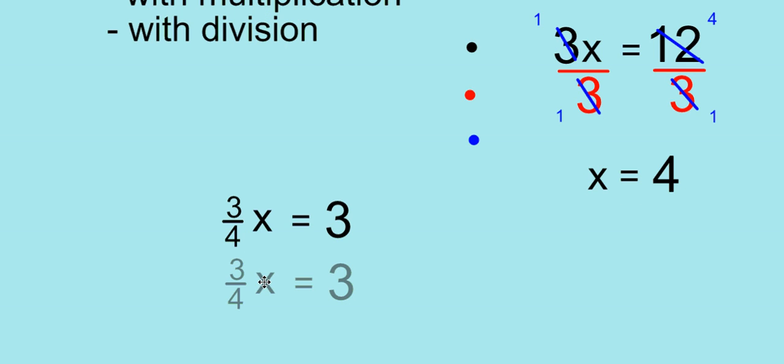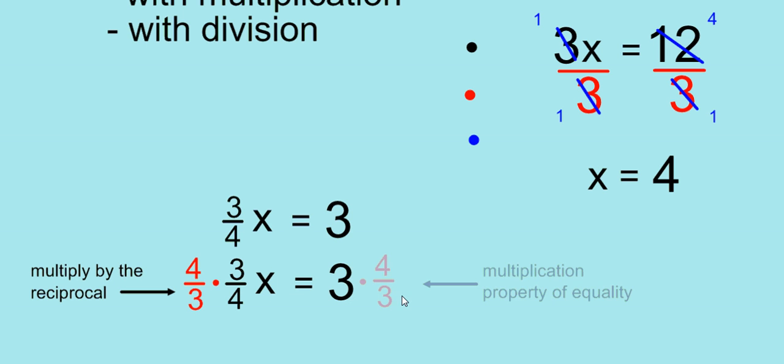What we need to do when we're solving this type of problem is first we have to multiply by the reciprocal, and that will reverse the process here. And on the other side, we must multiply by the same value. Similar to what we did in this simpler problem where we divided both sides by 3, here we're multiplying both sides by the same value, and that value happens to be the reciprocal.